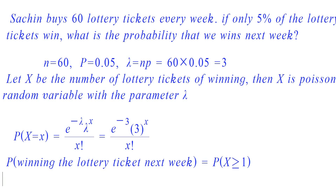But this is a tedious process. Therefore, we prefer another method. We know that the total probability of all tickets winning the prize is 1. Therefore, to find the probability of x greater than or equal to 1, we subtract the probability of any of the tickets not winning the prize from 1. That is equal to 1 minus probability of x equal to 0.